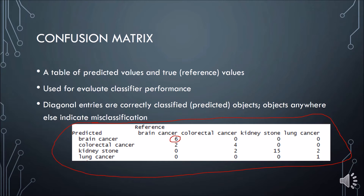This is a confusion matrix showing the actual disease that a group of patients have versus what the doctors diagnosed them with. Any entry on the diagonal line — the main diagonal — indicates correctly classified cases. Entries anywhere else indicate misclassification, so they are wrong. In this case, we have two here, which means two cases of actual brain cancer have been diagnosed as colorectal cancer, which is wrong.